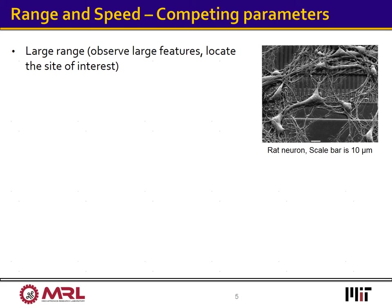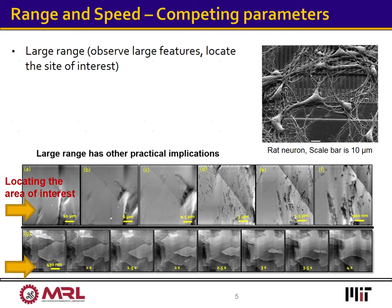Many samples of interest have features that are too large. The image on the right shows rat neurons on a substrate. Each neuron is tens of microns wide, and so requires a large field of view microscope. Large range has other practical implications as well. Imagine a scientist that is forced to study a small portion of a sample without having an idea how the rest of the sample looks like. Ideally, to determine an area of interest, one needs to be able to get a large view before zooming into an area of interest for additional study. The series of images at the bottom of the slide shows one such example scenario.